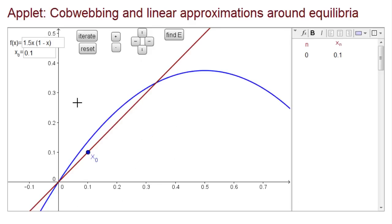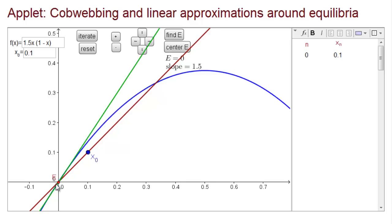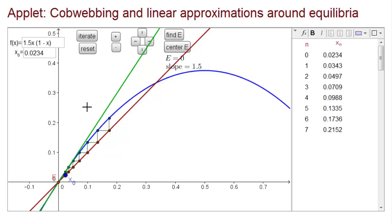Here's a cobwebbing plot of this dynamical system. We can see the two equilibria: one at 0 and one at 1/3. This applet allows us to fit tangent lines around the equilibria. Let's click on Find E and click near the equilibrium. It found the equilibrium at e equals 0 and fit a tangent line of slope 1.5. Since the slope is greater than 1, we know the equilibrium is unstable — if we start really close and iterate, we move away from either side.